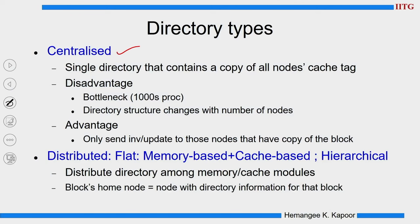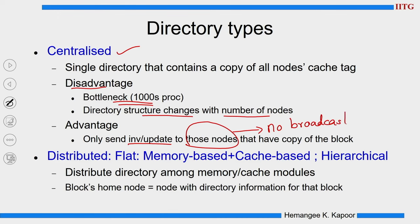In centralized, the disadvantage is that as we keep adding more processors, the structure keeps changing and we need a more scalable design. The advantage is you have one point of contact and you can send update or invalidation messages only to those nodes that have a copy - this enables no-broadcast. If you recollect snooping, in a bigger system we end up doing a global broadcast of snoop messages, but here we can avoid broadcast. In distributed, we have memory-based, cache-based, and hierarchical types.